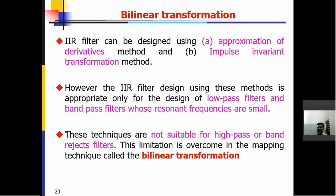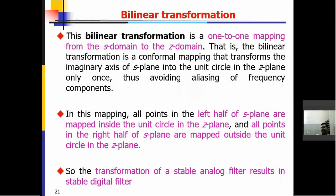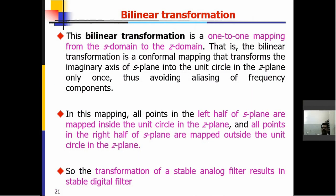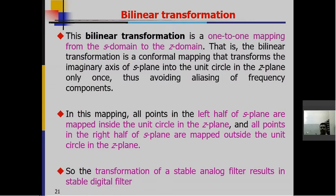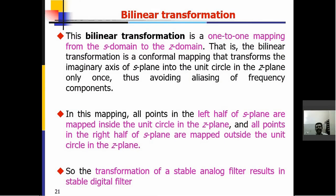These techniques are not suitable for high pass and band reject filters (band stop filters). This limitation is overcome in the mapping technique called bilinear transformation. Since the impulse invariant method and the approximation of derivative method are not suitable for high pass filters and band stop filters, we use bilinear transformation to overcome this disadvantage.